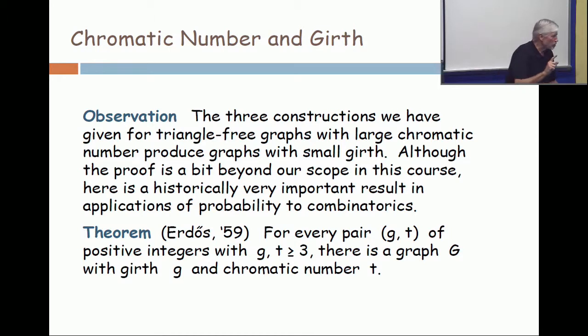If there are no cycles in a graph, what's the chromatic number? At most two. You've got to have an edge to get up to two. But if there are no cycles, then the chromatic number is very small. So in order for the chromatic number to be big, there have to be cycles.